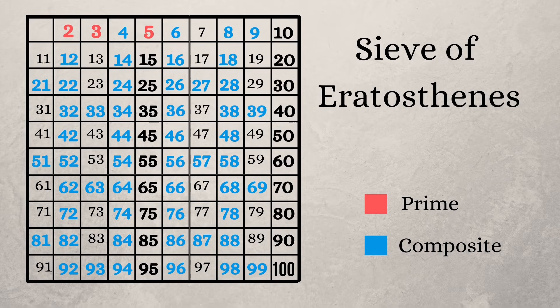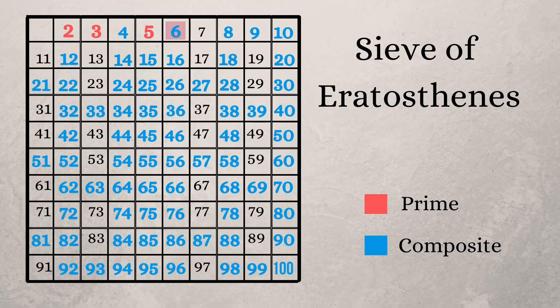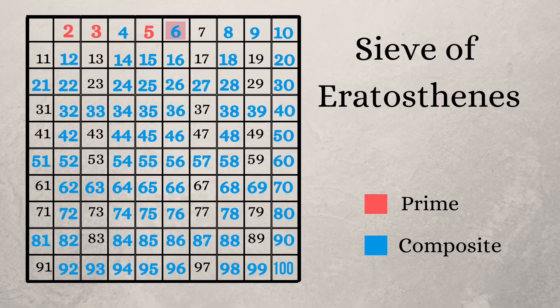And what happens to its multiples? The multiples are marked as composite numbers. The next number six is already a composite number, so skip it and move on to the next unmarked number, seven.